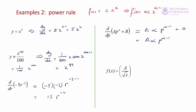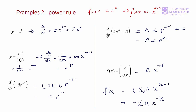Our last example has a square root expressed as a radical. We reformat it into a more usable form: a√x = a·x^(1/2). Then f'(x) = (1/2)·a·x^(1/2 - 1) = (1/2)·a·x^(-1/2), which equals (-1/2)·a·x^(-3/2).